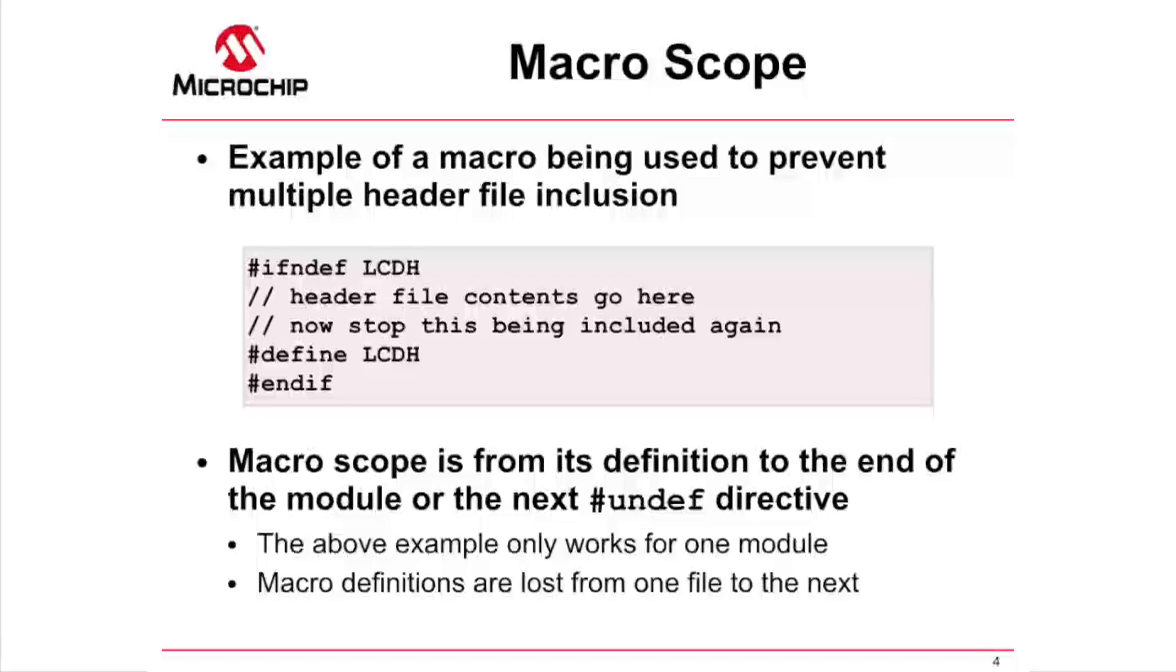However, there is a common misconception that this mechanism prevents the header file contents from being compiled more than once, regardless of where the header file was included. The reality is that this only prevents multiple inclusion in the one module, not in other modules. To understand this, you have to consider a macro's scope. And if you're not sure of the difference between a source file and a module, you might want to consult your favorite C text.